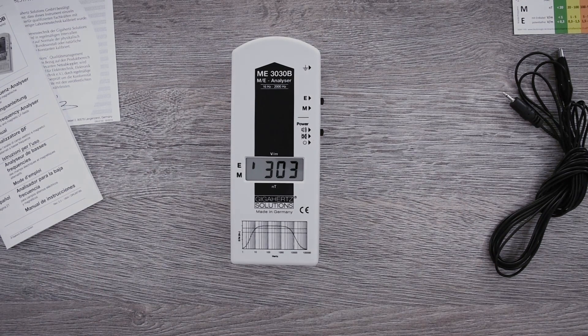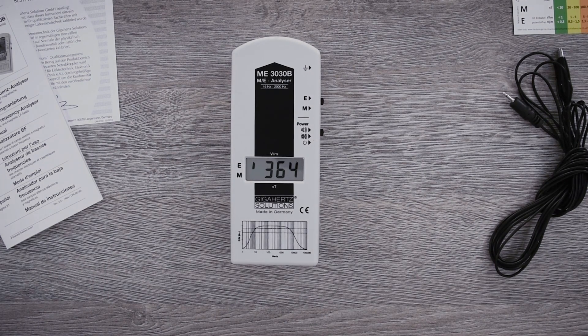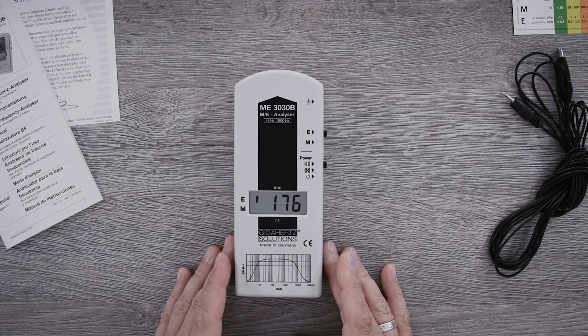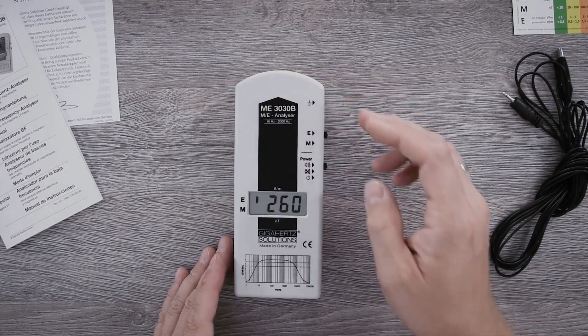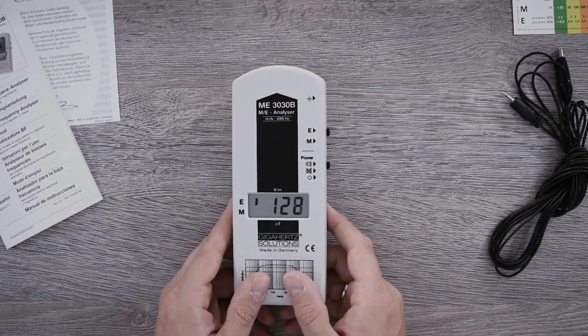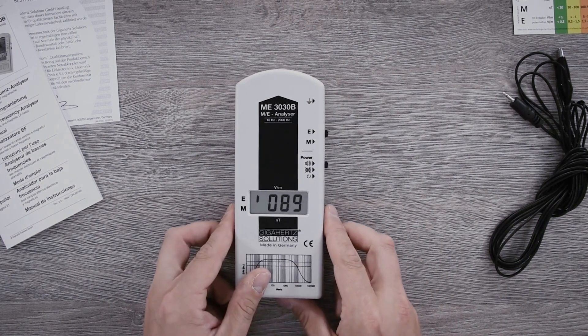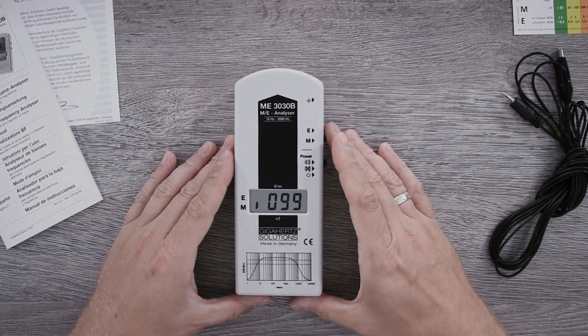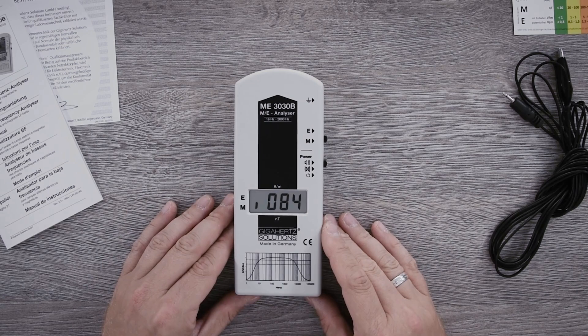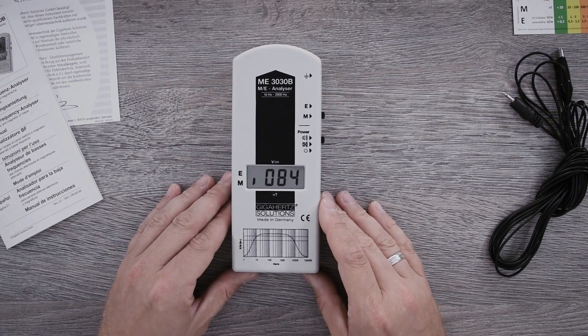The measuring device measures only one dimension both electrically and magnetically. That means our measurement sensors are built in up here. The device is typically held down here. There is nothing special to be taken into account for magnetic field measurement. Only the total load must be measured in three dimensions.